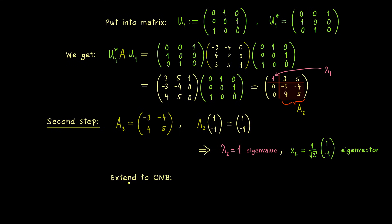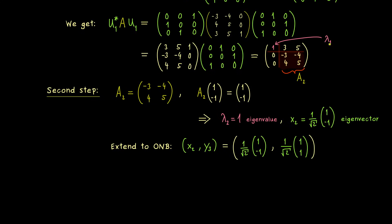And as before, we want to extend it to a whole ONB of C2. So we have to choose a different vector, which we call y3, which also has length 1 and is orthogonal to x2. This is quite simple in two dimensions, because we just have to rotate this given vector. Hence we can take the vector 1, 1. Obviously orthogonal to x2 and also with length 1. And now as before, we put this into a matrix U2 and also calculate the adjoint. And obviously we can just pull out the factor 1 over the square root of 2.